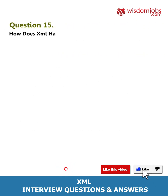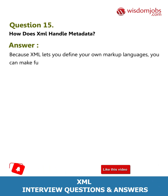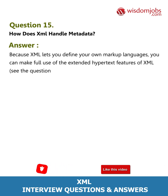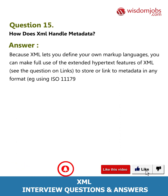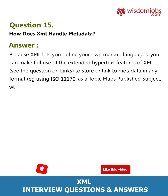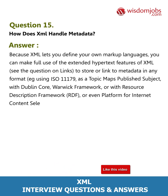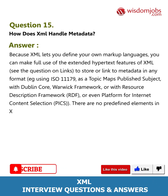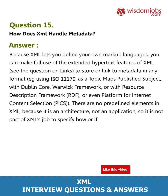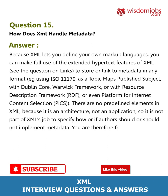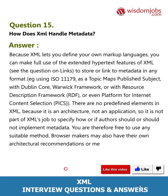Question 15: How does XML handle metadata? Answer: Because XML lets you define your own markup languages, you can make full use of extended hypertext features to store or link to metadata in any format — for example, using ISO 11179, topic maps, Dublin Core, Warwick Framework, Resource Description Framework (RDF), or even Platform for Internet Content Selection (PICS). There are no predefined elements in XML because it is an architecture, not an application. So it is not part of XML's job to specify how authors should implement metadata. You are therefore free to use any suitable method, and browser makers may also have their own architectural recommendations.